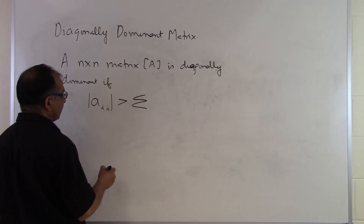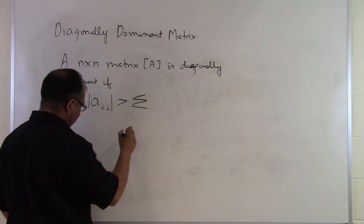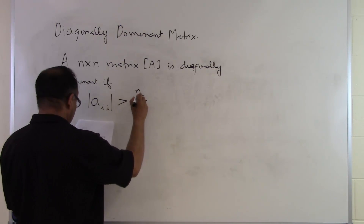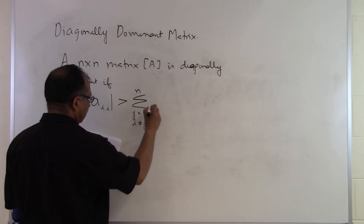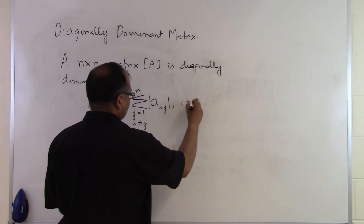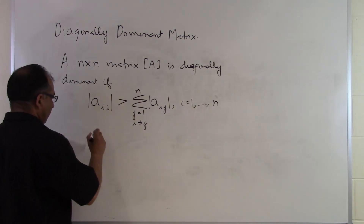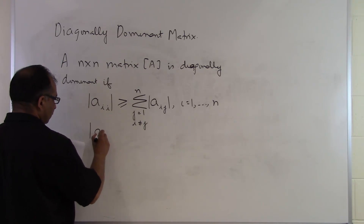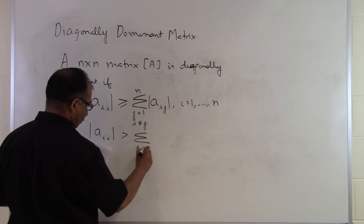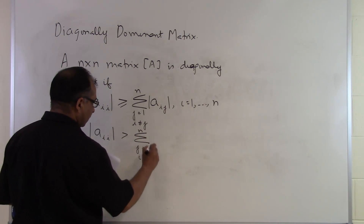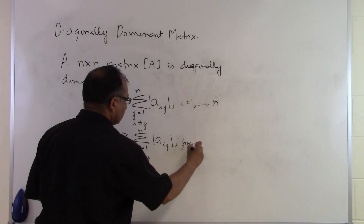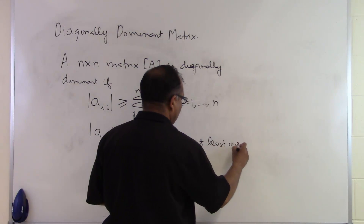We will explain it through an example and also go through the formula. We have a summation where j goes from 1 to n, with i not equal to j, of the absolute value of a_ij, for i equal to 1 through n. The diagonal element a_ii must be strictly greater than that summation for at least one i.